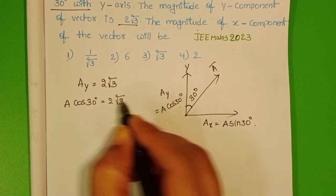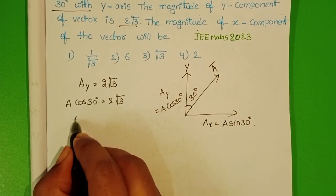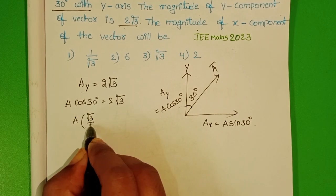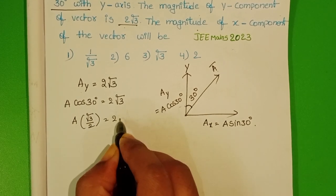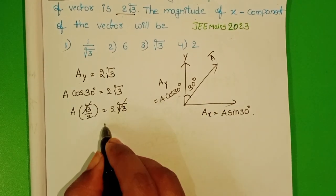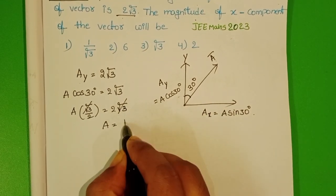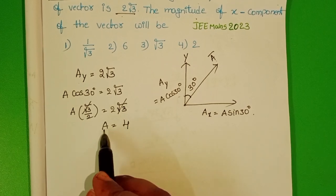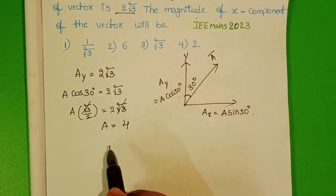Cos 30 degrees value is √3/2. On both sides √3 gets cancelled. Then A equals 4, where A is the magnitude of the given vector.